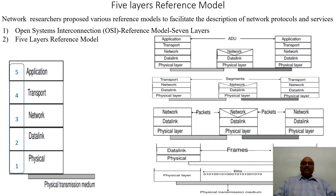Above the data link layer, we have another layer called the network layer. If the sender and the receiver are not connected with the same physical media — meaning they are located at a distance apart — then the network layer comes into picture. The unit of exchange of information happening from one end to another with the help of this network layer is called a packet. The packet contains a sequence of bytes of information put together to transmit from one end to another.